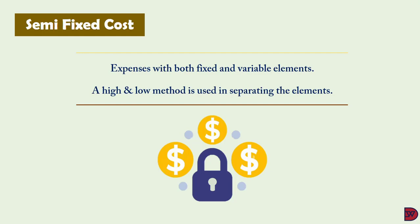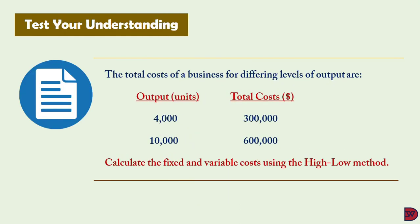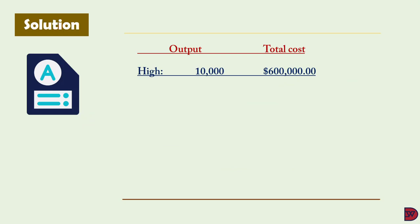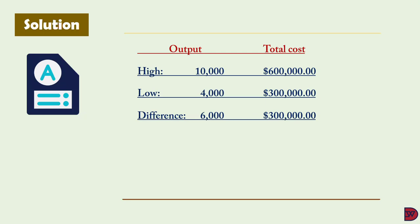With semi-fixed costs, the high-low method is used to segregate the variable from the fixed cost. For example, at 4,000 units the total cost is $300,000, and at 10,000 units the total cost is $600,000. The difference in output is 6,000 units and the difference in cost is $300,000. Therefore, the variable cost per unit is $50 (i.e., $300,000 ÷ 6,000).